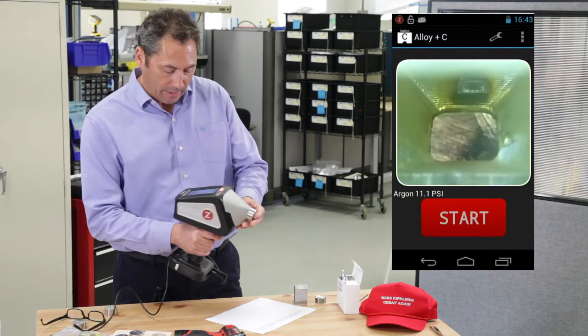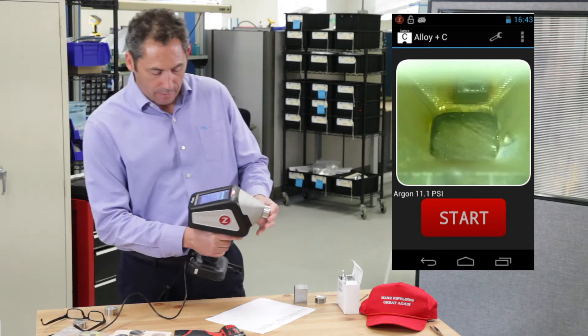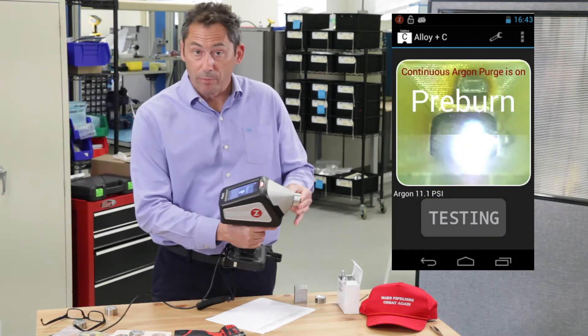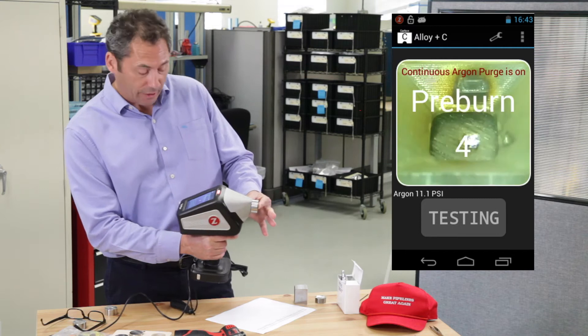Let's shoot it, get it on there, line it up. Okay, first thing happens, we do the pre-burn about six seconds while the argon is flushing as well.